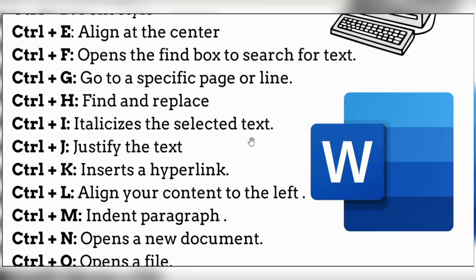Now if you have mistakenly written a word in your document and you want to replace that word with the correct one, press CTRL plus H and you will find a box where you can enter your wrong word and also the word you want to replace. Just click enter and your specific word will be changed throughout the whole document.